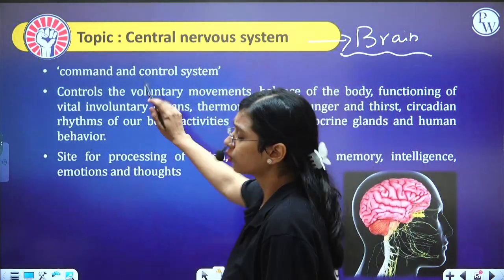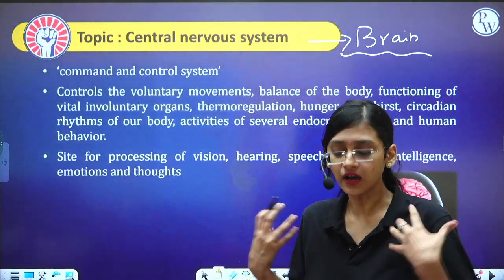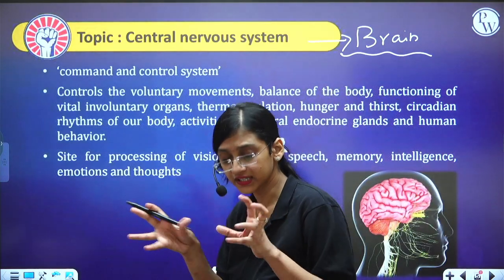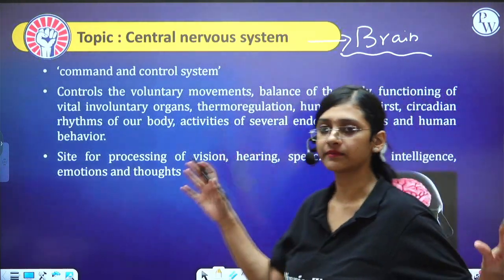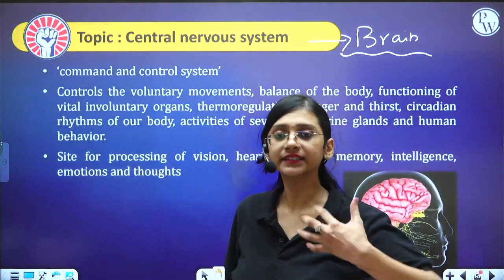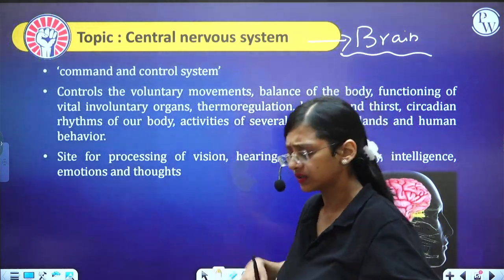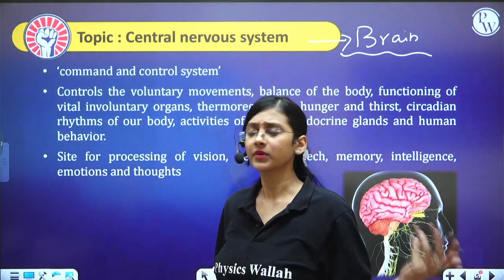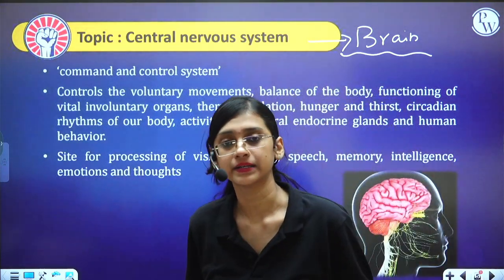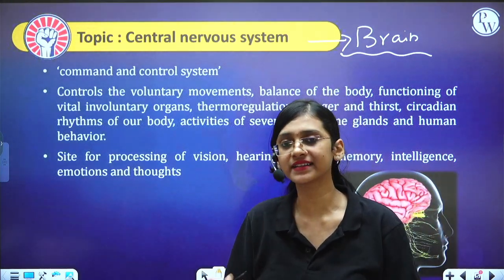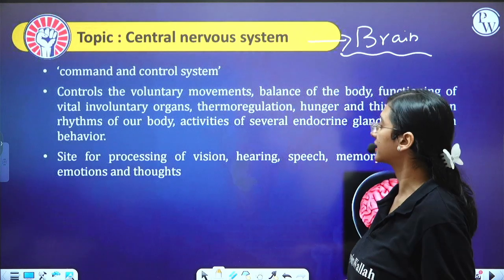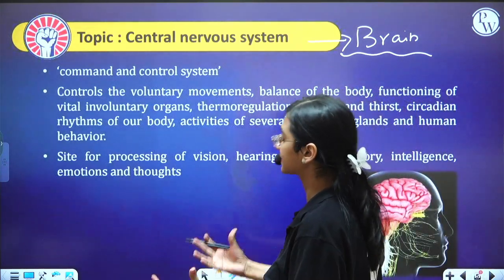The brain controls voluntary actions — movements in our control, such as hand, leg, and head movements — as well as involuntary actions. It also controls balance and posture of the body, and the functioning of vital involuntary organs such as the heart, intestine, excretory system, and stomach.